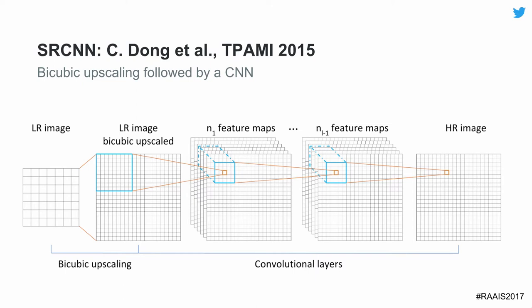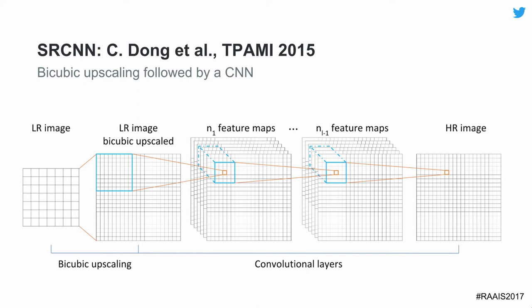The first deep learning approach was a method by Dong, which really opened the doors for deep learning as the basis for super resolution. It was almost a naive, out-of-the-box method — stick a CNN in the middle and see how well it performs. And it actually performed pretty well. Pretty much as with everything in deep learning, the first time you try it, it works better than all previous methods.